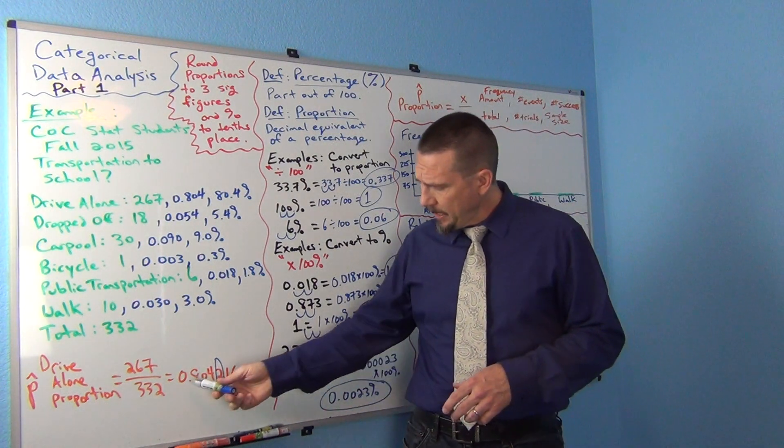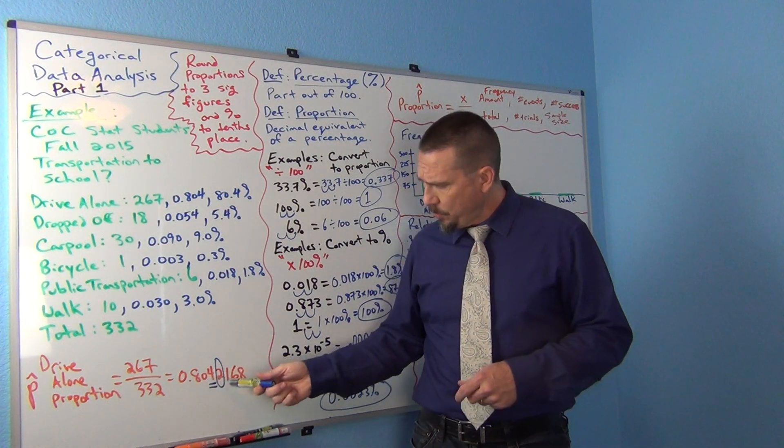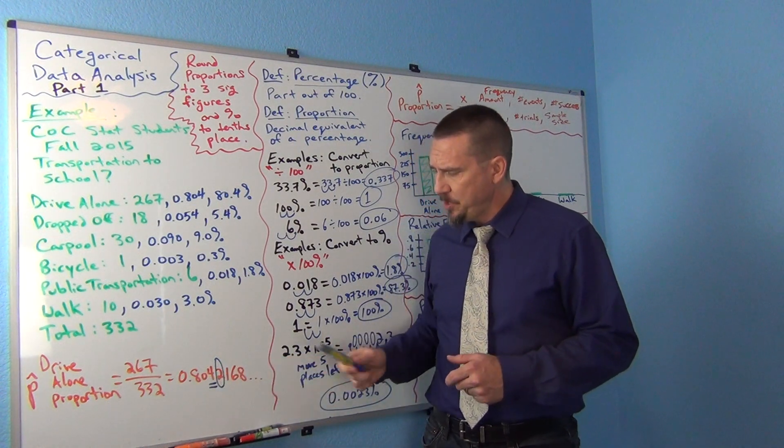Now, when I do that, I get, I divide these two numbers, I get this decimal, 0.8042168 keeps going.